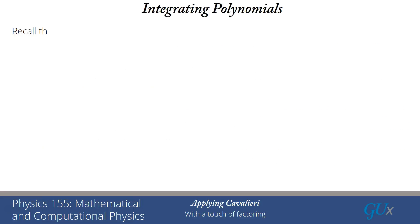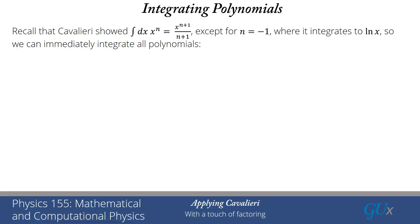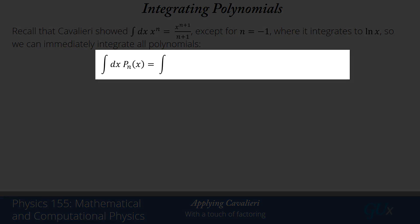Let's start with the simplest thing, integrating polynomials. You need to recall the Cavalieri result that the integral of x^n was x^(n+1)/(n+1). That holds for every n except for n = -1 because we can't divide by 0. We know that the integral of 1/x is actually equal to the logarithm of x. Using this, we can integrate any power that comes up, and that means we can integrate any polynomial.